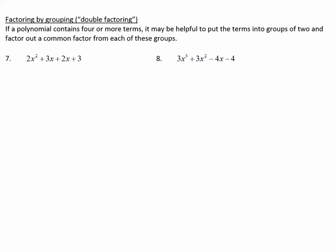Let's talk about factoring by grouping, or double factoring. If a polynomial contains 4 or more terms, it may be helpful to put the terms into groups of 2 and factor out a common factor from each of these groups. We're looking for two groups: the first two terms in one group and the second two terms in another group.